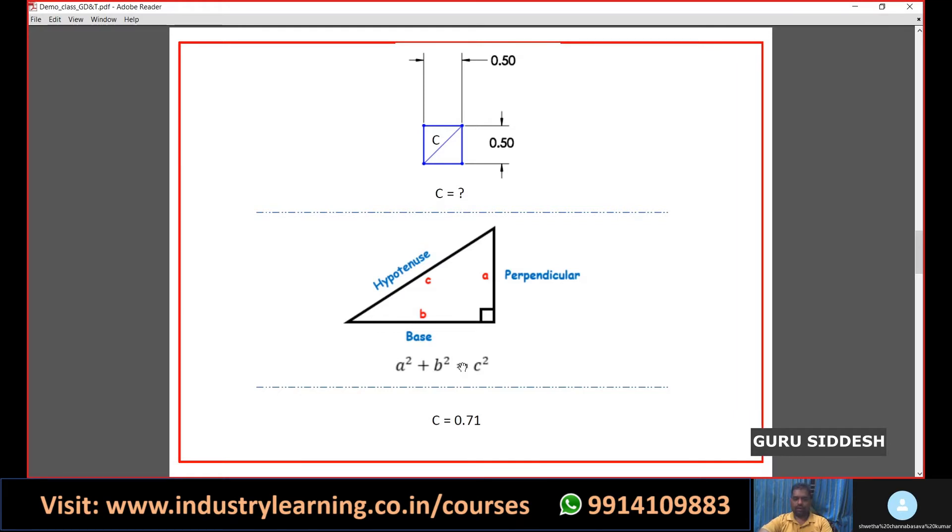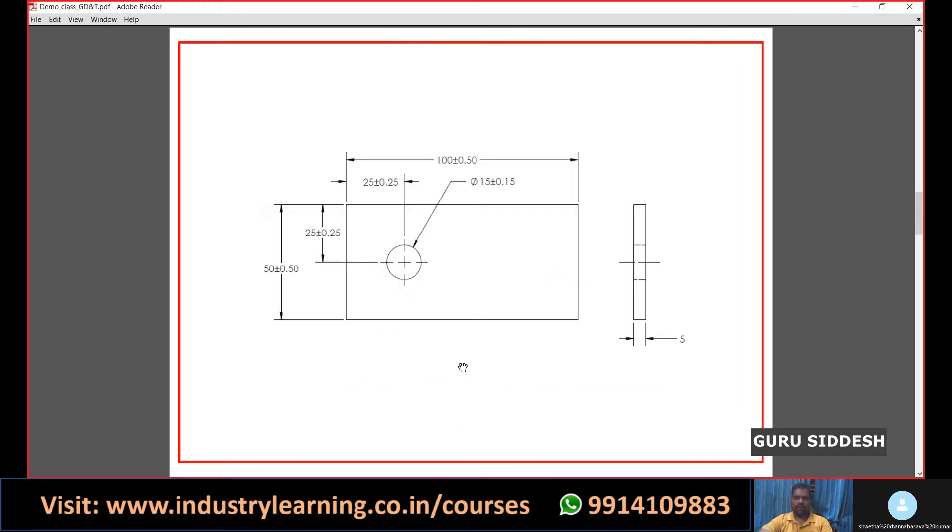If you go back to the drawing, there is 0.25. In one direction, the range is 0.25 plus 0.25, which is the range of the tolerance zone. So totally there is a zone of 0.50. In the other direction also, 0.25 plus 0.25 will create 0.5.